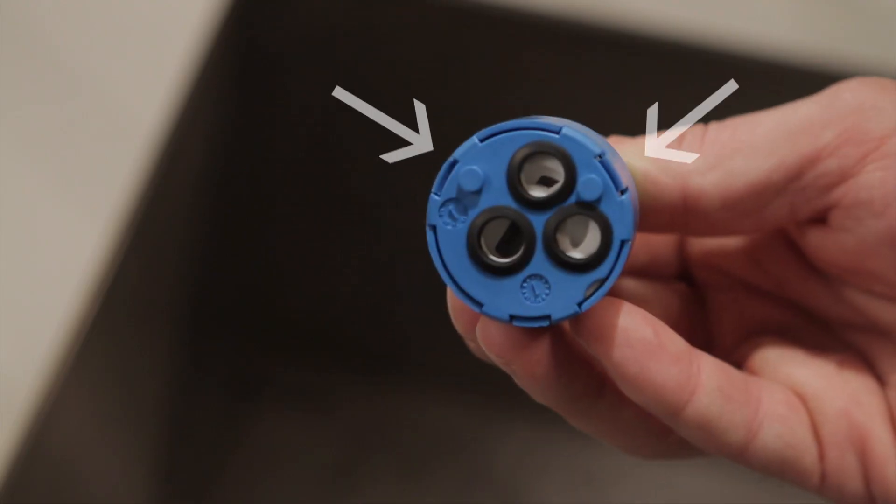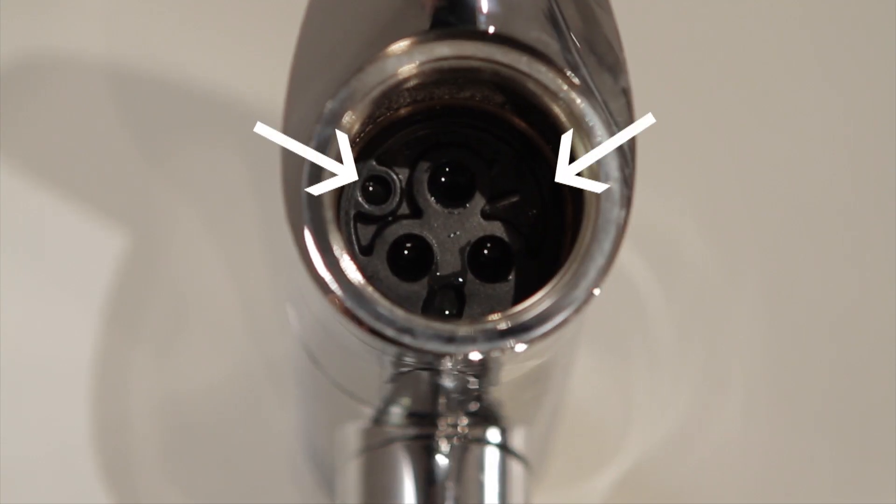The new cartridge has two studs on the underside. Make sure they're placed in the corresponding notches in the mixer body.